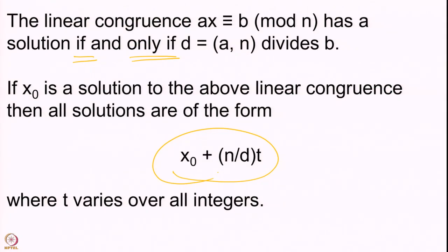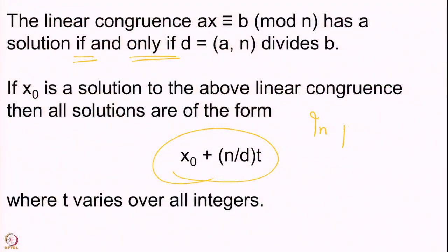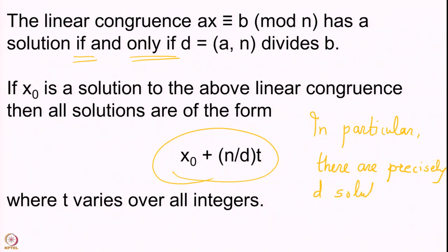We also saw that whenever you have one solution — assuming d is a divisor of b so that a solution exists — if one solution is named x₀, then all other solutions in the integers are obtained by the formula x₀ plus (n/d)·t. This formula gives us all the solutions. In particular, if you are looking at solutions modulo n, there are exactly d solutions.